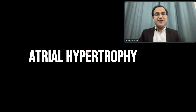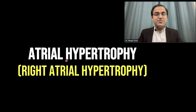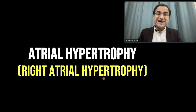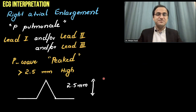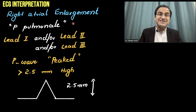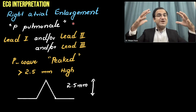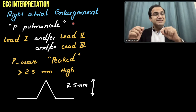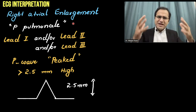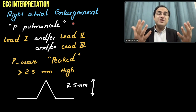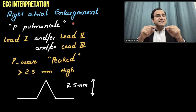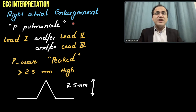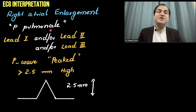First of all we will determine the atrial hypertrophy. Coming to right atrial hypertrophy — how do you see right atrial hypertrophy on ECG? Whenever there is atrial enlargement, you will see changes in the P wave, because whenever the atria contract, it results in a P wave on ECG. So whenever there are abnormal changes in the atria, it will result in a change in the shape of the P wave. Whenever there is right atrial enlargement, it appears as P pulmonale.